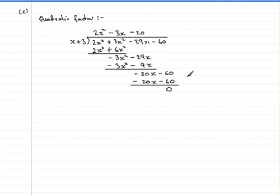We've now got the quadratic factor and we're on our way to factorizing f(x) completely. I'm going to put 'therefore f(x)' is identical to the linear factor x plus 3 multiplied by the quadratic factor that we've just calculated: 2x squared minus 3x minus 20.